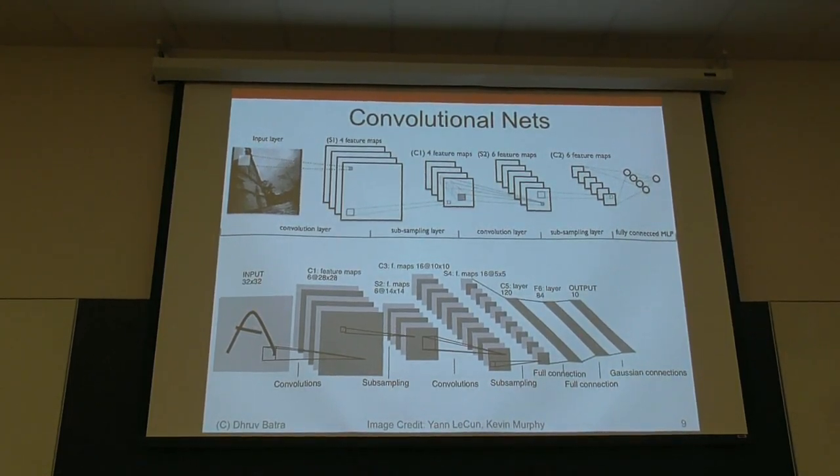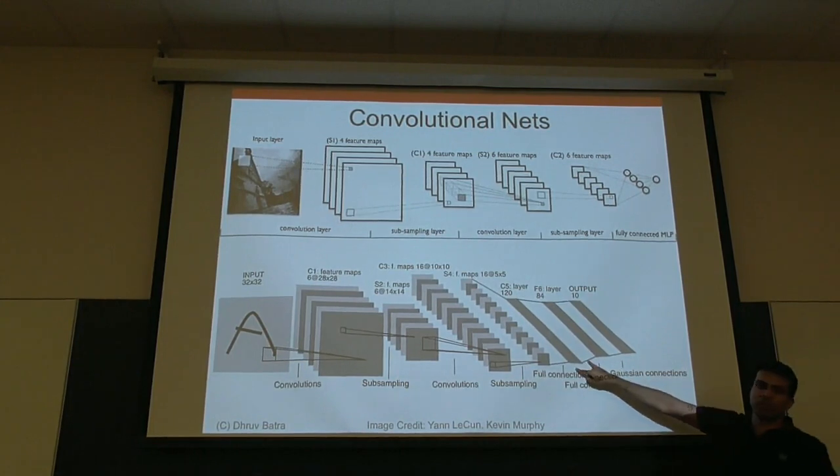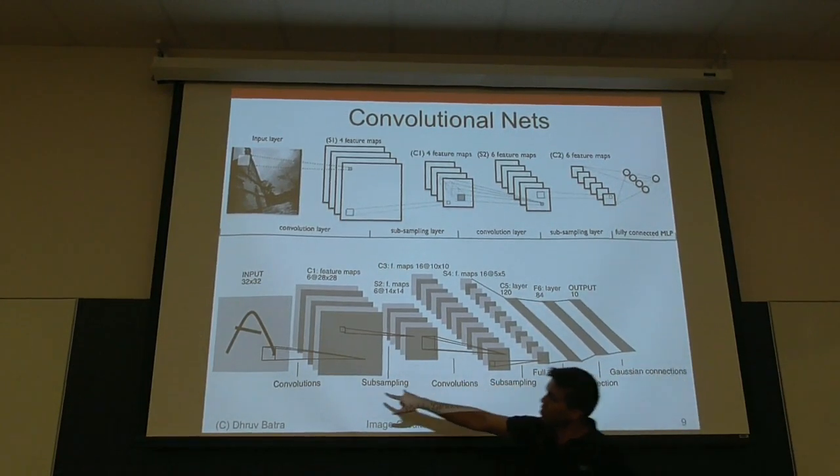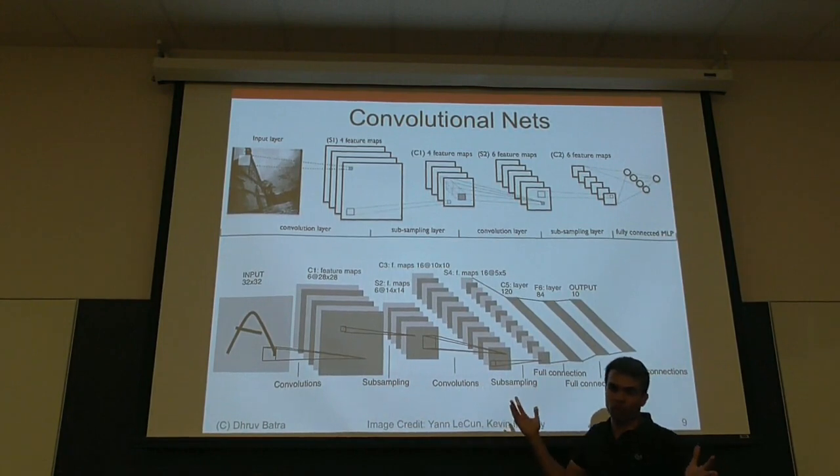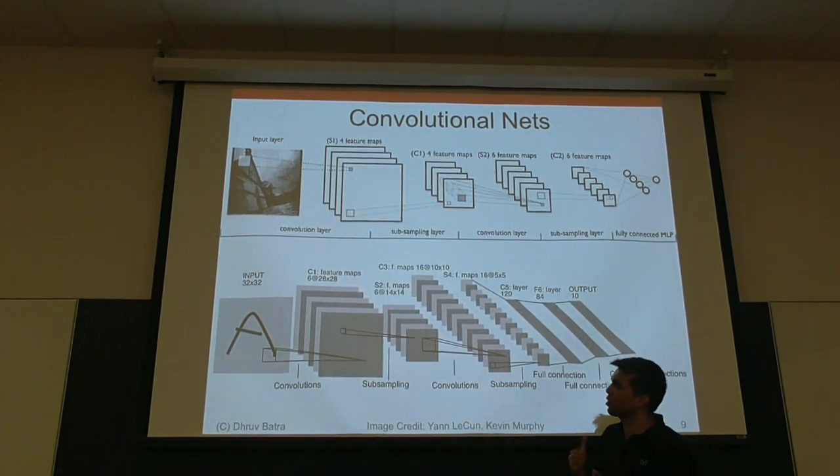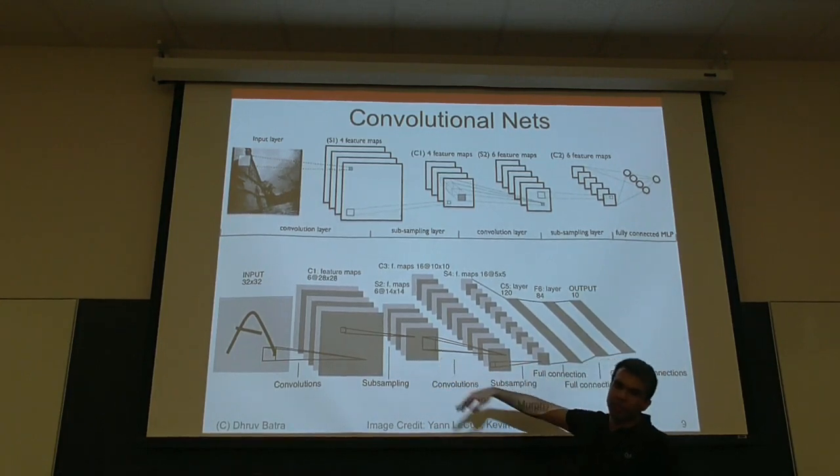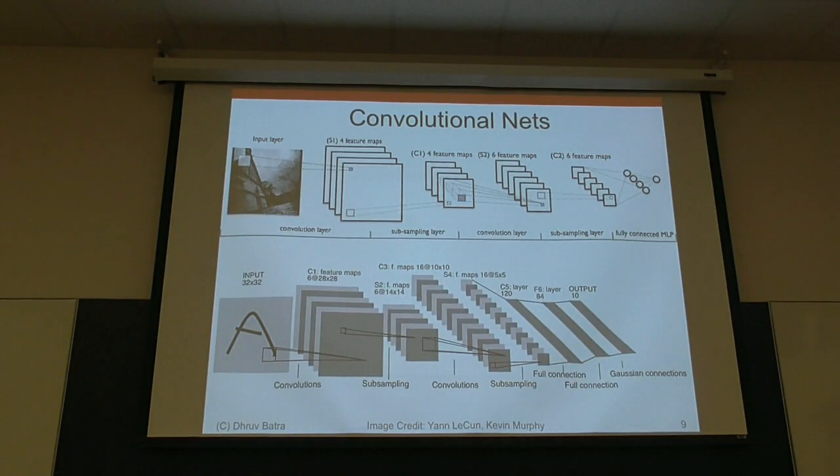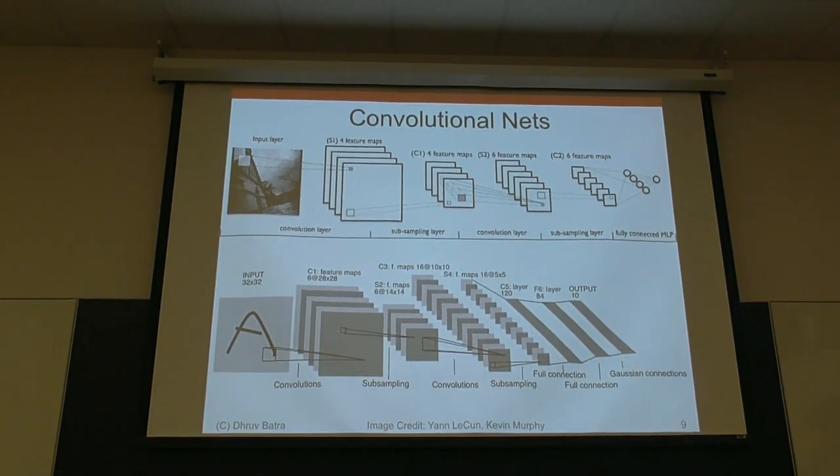But today what I want to do is I want to actually just derive, given a convolutional layer. So we know how to do this. We know how to write fully connected layers. We know how to do backprop in that. We've derived that in class. What I want to do is just tell you once you do a convolution, how do you write down those parameters and how do you do backward pass with respect to convolutional layers. The backward pass with respect to max pooling or subsampling layers is going to be simple.